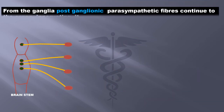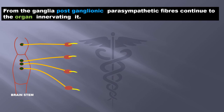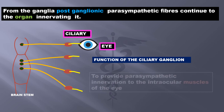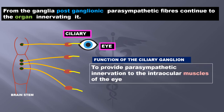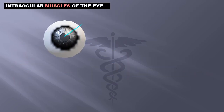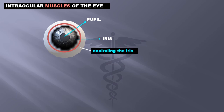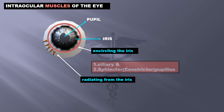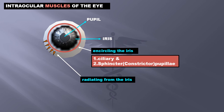From the ganglia, postganglionic parasympathetic fibers continue to the organ, innervating it. Fibers from the ciliary ganglia innervate the eye. The main function of the ciliary ganglion is to provide parasympathetic innervation to the intraocular muscles of the eye. In the center of the eye is the pupil and around the pupil is the iris. There are muscles that encircle the iris and muscles that radiate from the iris. Those encircling the iris are the ciliary and sphincter or constrictor pupillae; those radiating from the iris are the dilator pupillae.